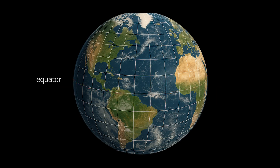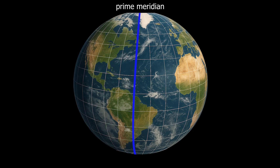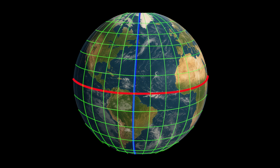The equator is the imaginary line that divides the Earth into the northern hemisphere and the southern hemisphere. It is marked as zero degrees latitude. Meanwhile, the prime meridian is the line that divides the Earth into the eastern hemisphere and the western hemisphere. It runs through Greenwich, England, and is marked as zero degrees longitude. Every position on Earth is measured in terms of latitude and longitude, using these two lines as the starting point.